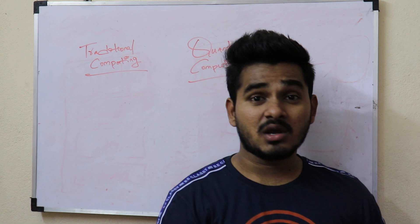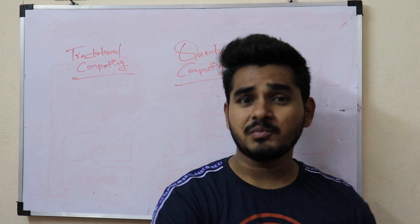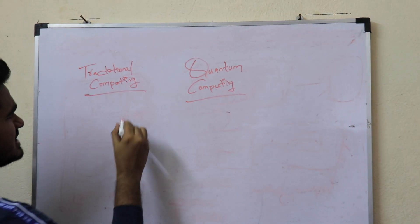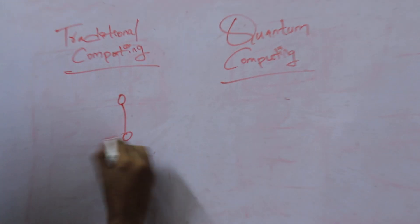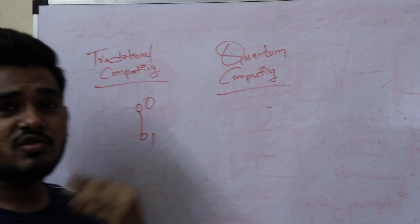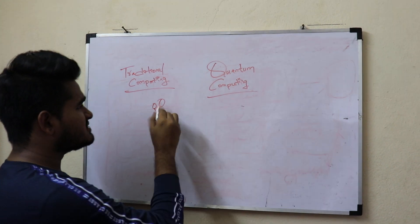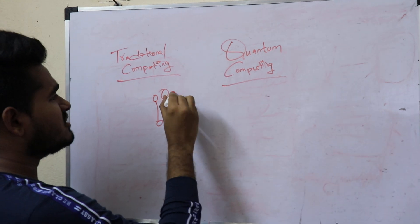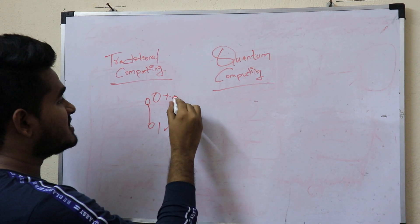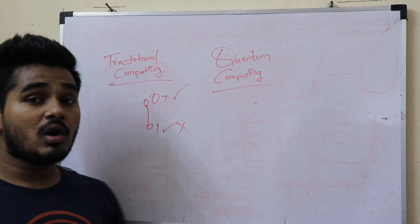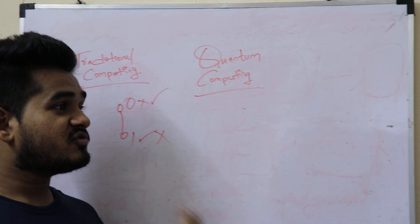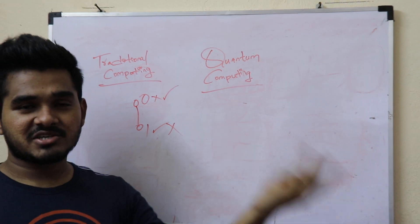Our traditional computing deals with only two values: zero and one. Whether you are working on any particular process, it deals with only zero or one — if it is not zero then it is one. Only one thing can be possible at a time. It is like a coin toss — it must be heads or tails, but not both.